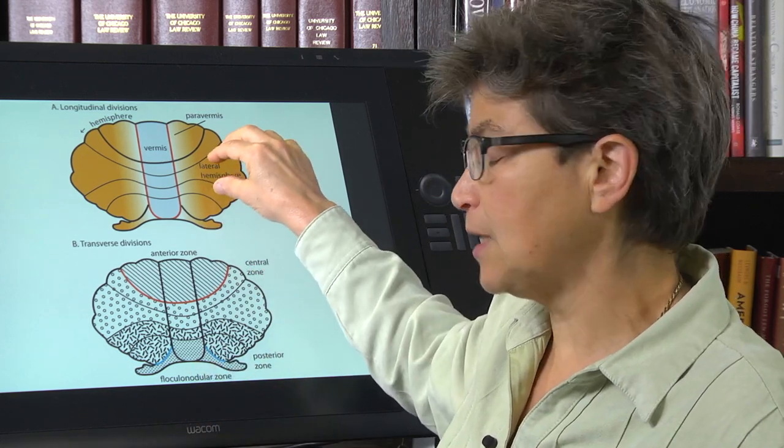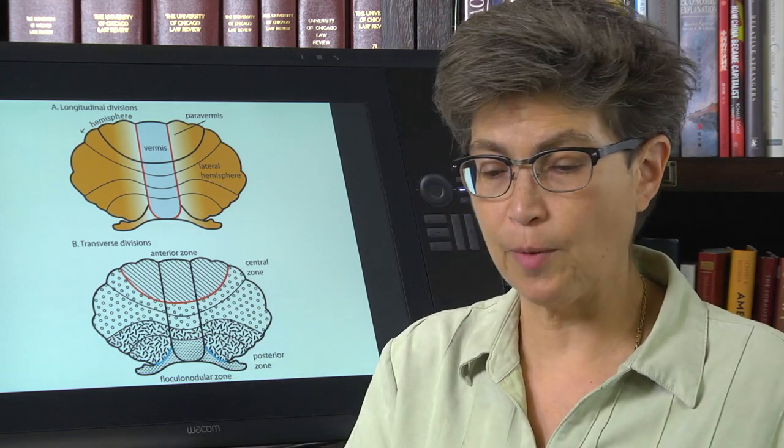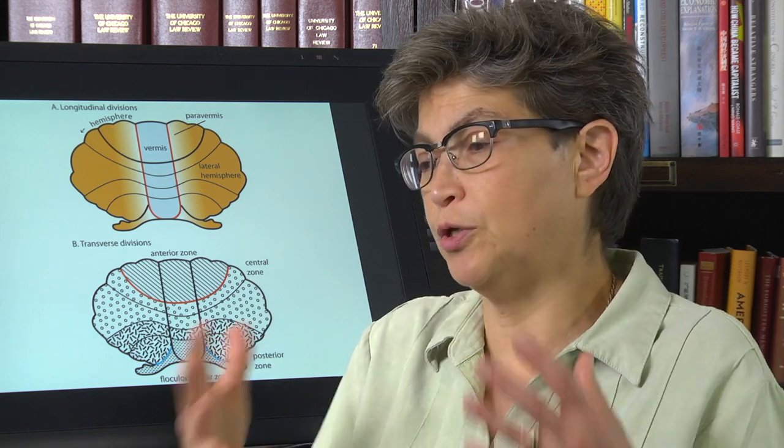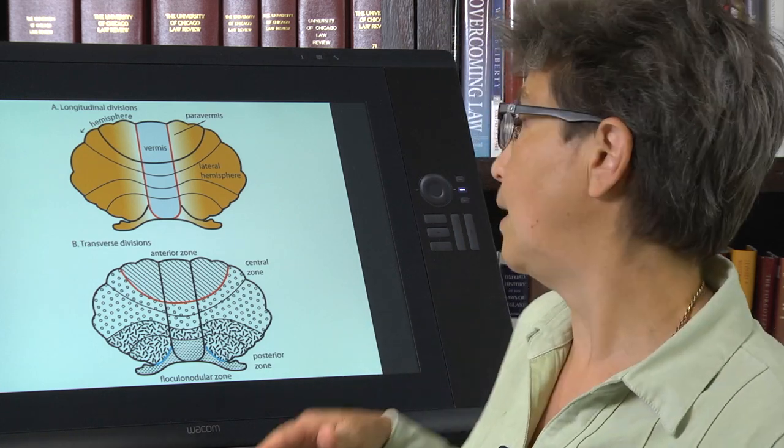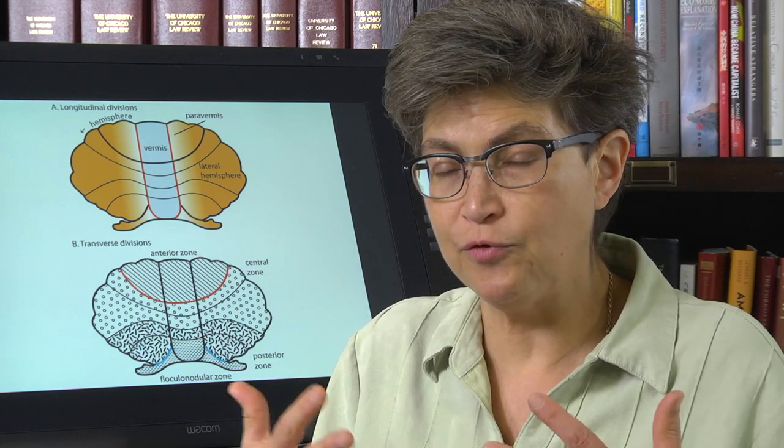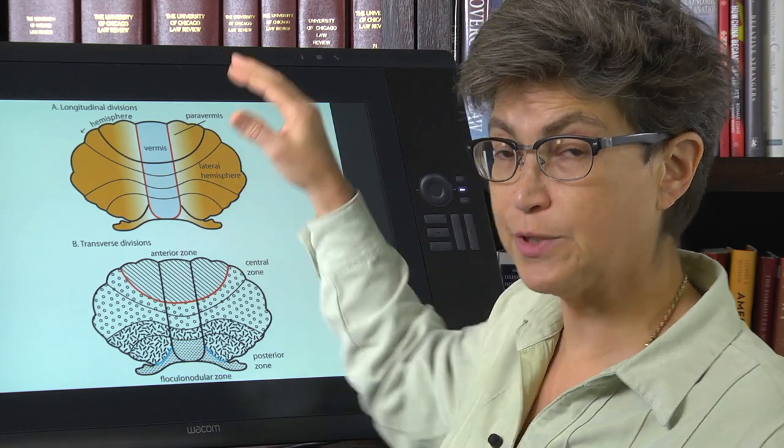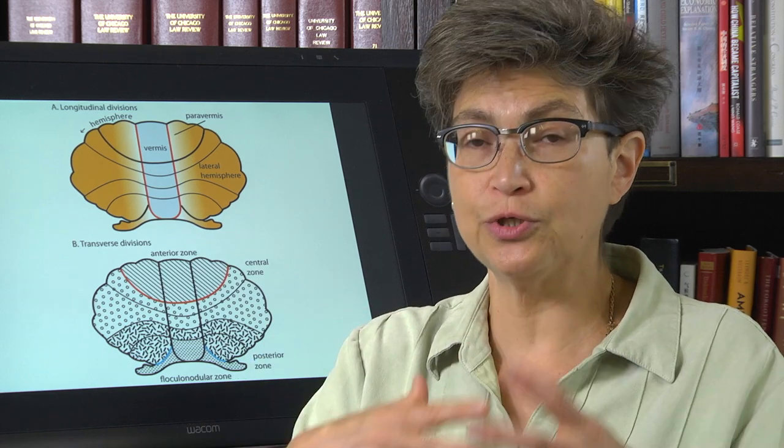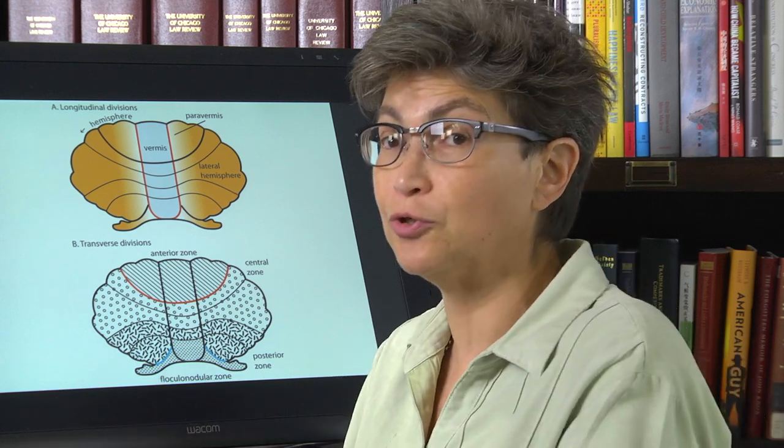The other thing that these lateral lobes are very important for is learning new movements. Regardless of what part of the body they use, if you are an adult and you want to learn, you to teach yourself a new dance step or a new sport or a new instrument, some new way of using your body, it is going to be the lateral hemispheres, the lateral lobes that are going to work with parts of frontal cortex in order to coordinate that new learned movement, that new movement that you are going to learn.